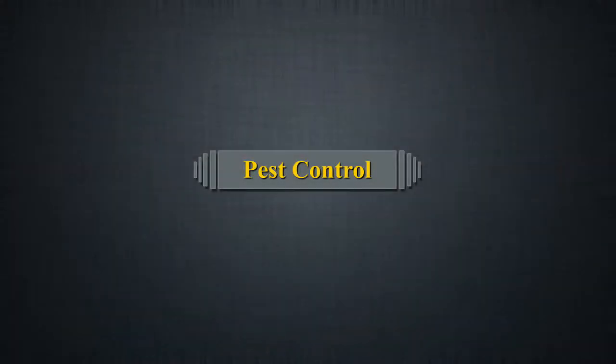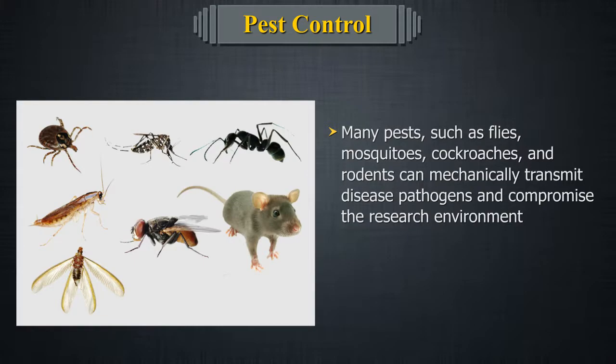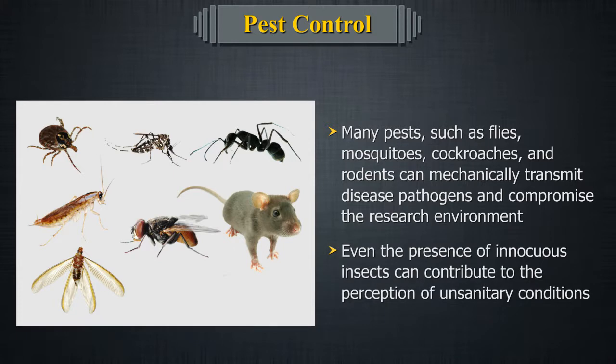Test control. Many pests such as flies, mosquitoes, and cockroaches can mechanically transmit disease pathogens and compromise the research environment. Even the presence of innocuous insects can contribute to the perception of unsanitary conditions.